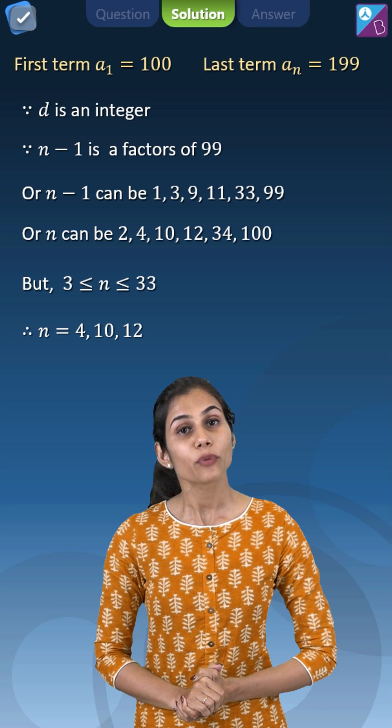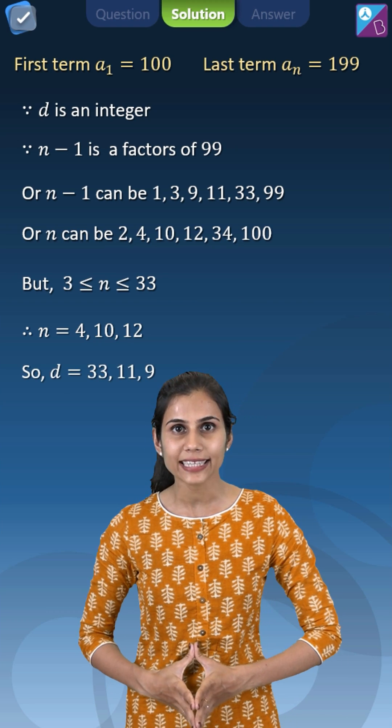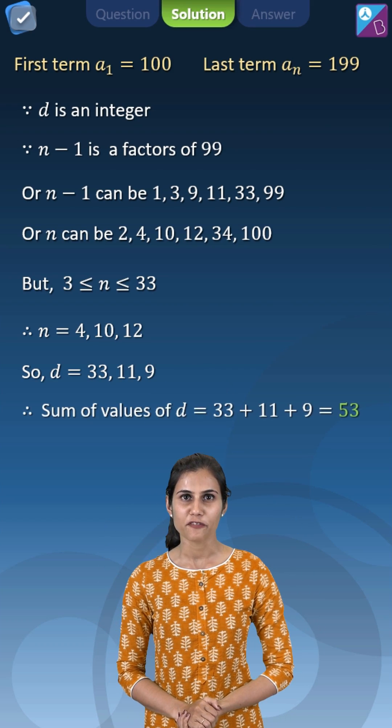When you divide 99 with each of these three values you get the 3 acceptable values of D, that is the common difference, to be 33, 11 and 9. Add them up, you have your answer: 53.